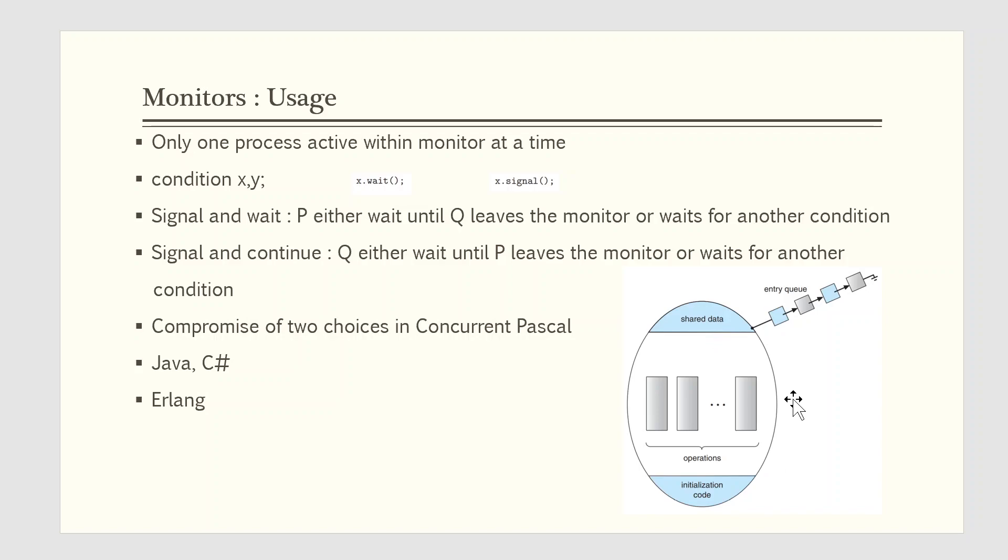However, the monitor construct as defined so far is not sufficiently powerful for modeling some synchronization schemes. For this purpose, we need to define additional synchronization mechanisms. These mechanisms are provided by the condition construct. A programmer who needs to write a tailor-made synchronization scheme can define one or more variables of type condition, such as condition x and y.